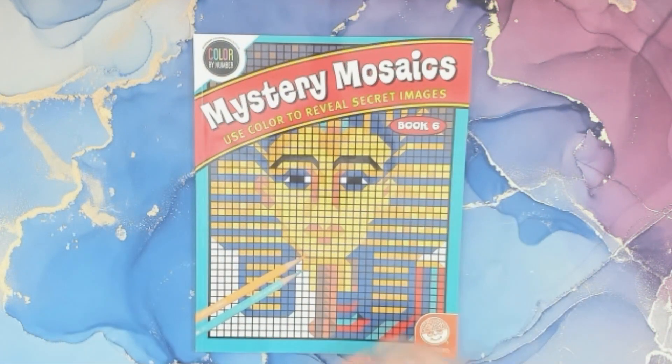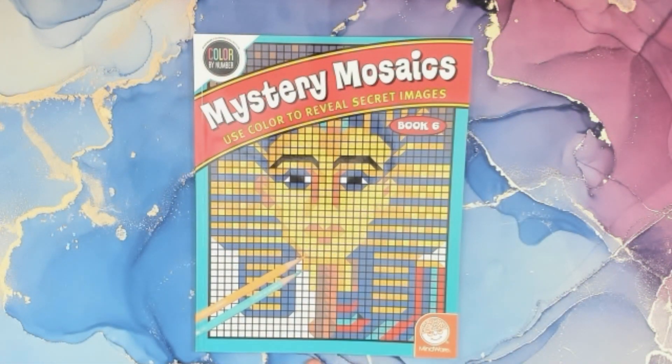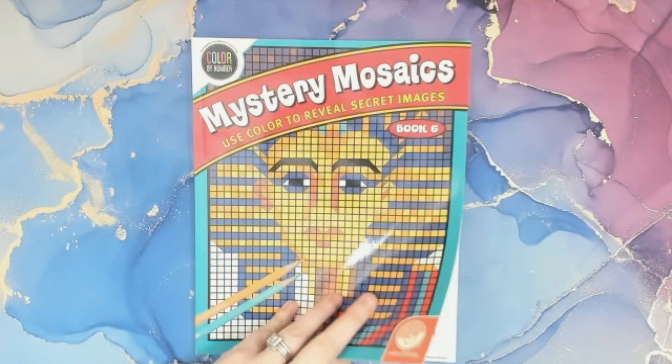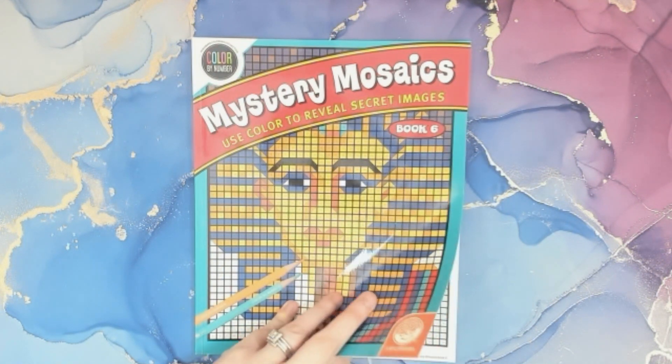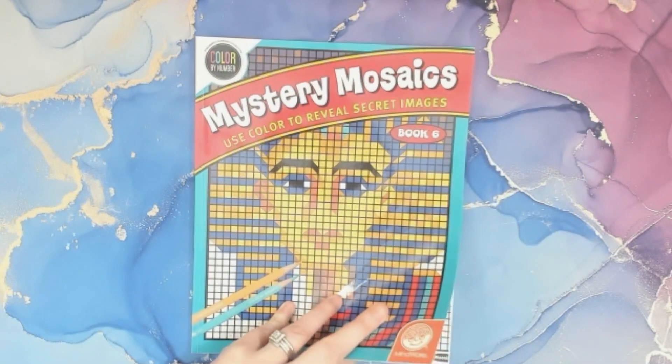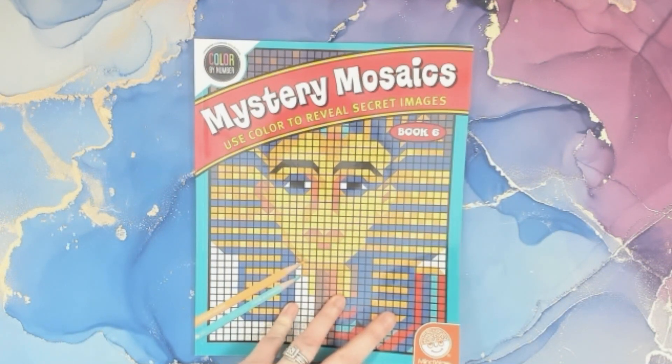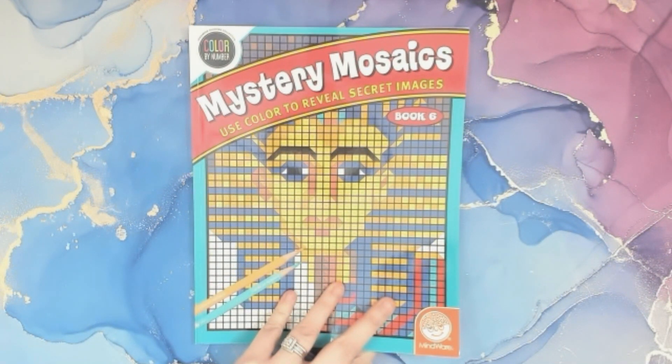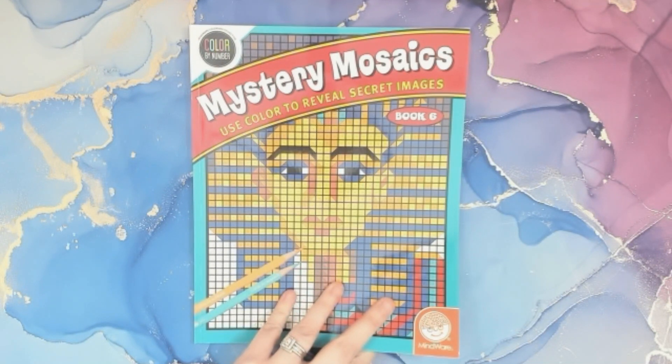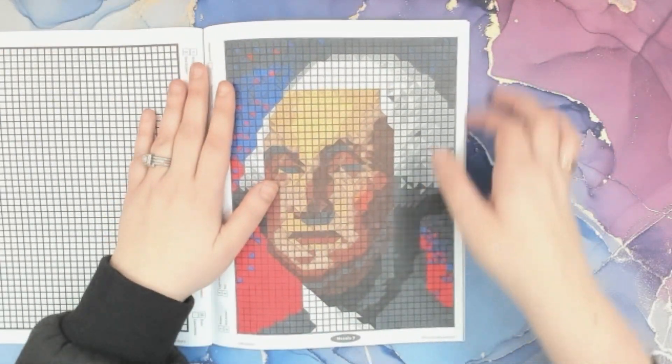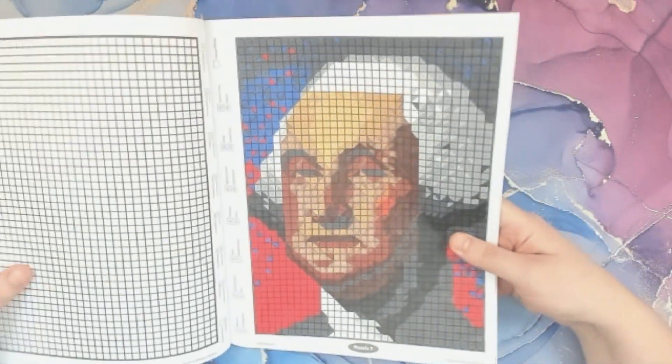The next one I did is Mindware Coloring Collection Color by Number Mystery Mosaics, Use Color to Reveal Secret Images, Book Six. I colored in this one. It's an old one. I remembered I colored in this one. Since it was President's Day, I found a picture of George Washington, and so I colored this one. This is probably my favorite picture of them all that I colored this month.